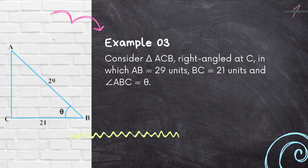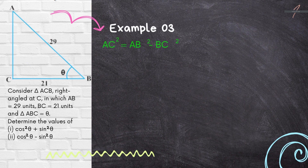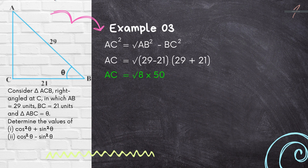Now consider triangle ACB, right angled at C, in which AB is 29 units, BC is 21 units, and in triangle ABC angle B is theta. We need to determine the values of cos²θ + sin²θ and cos²θ − sin²θ. In triangle ACB, AC² = AB² − BC² = (AB − BC)(AB + BC), so AC = √(8 × 50), which means AC is 20 units.